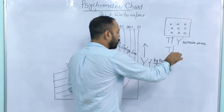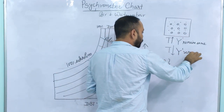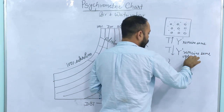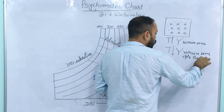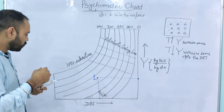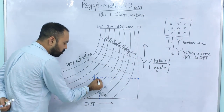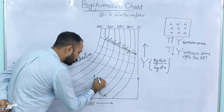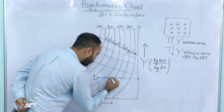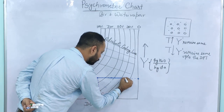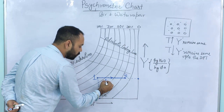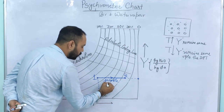As temperature decreases, Y' remains the same up to the dew point. Now I am going to show these two concepts on the psychrometric chart. Suppose the initial position is point 1 and you are increasing the temperature. How to show sensible heating? Suppose point 1 moves to point 2 — this arrow or direction shows sensible heating.